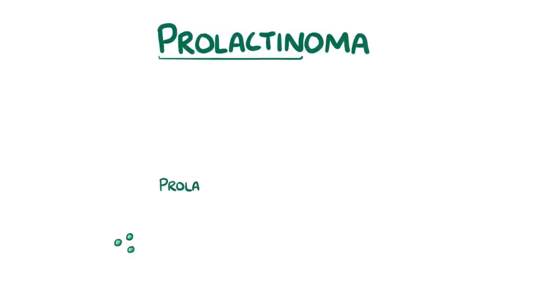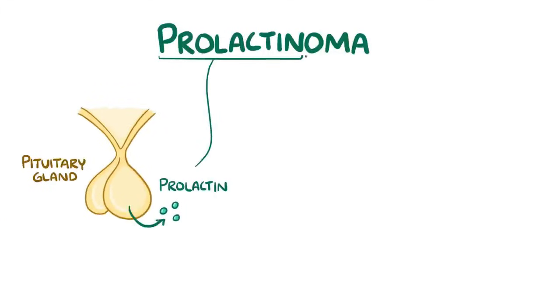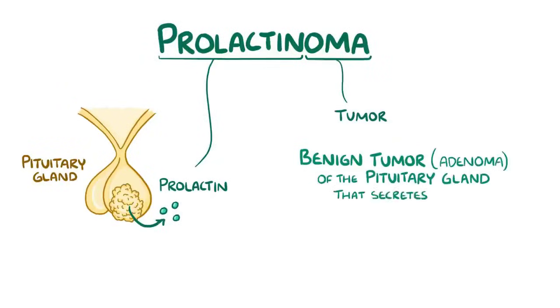With prolactinoma, prolactin refers to the endocrine hormone secreted by the pituitary gland, and oma refers to a tumor. So a prolactinoma is a benign tumor or adenoma of the pituitary gland that secretes excess prolactin.